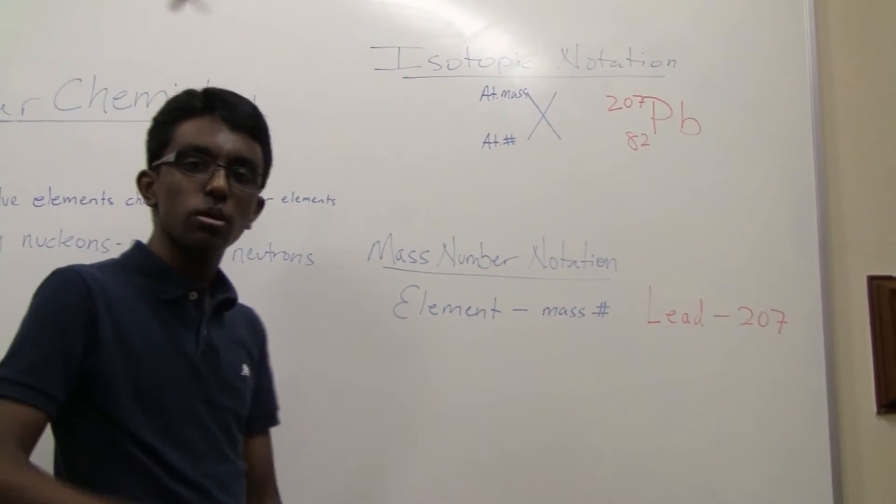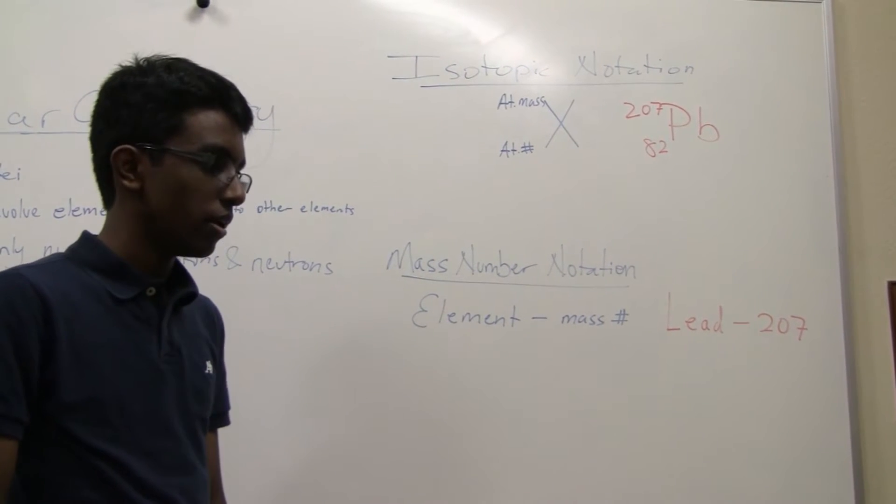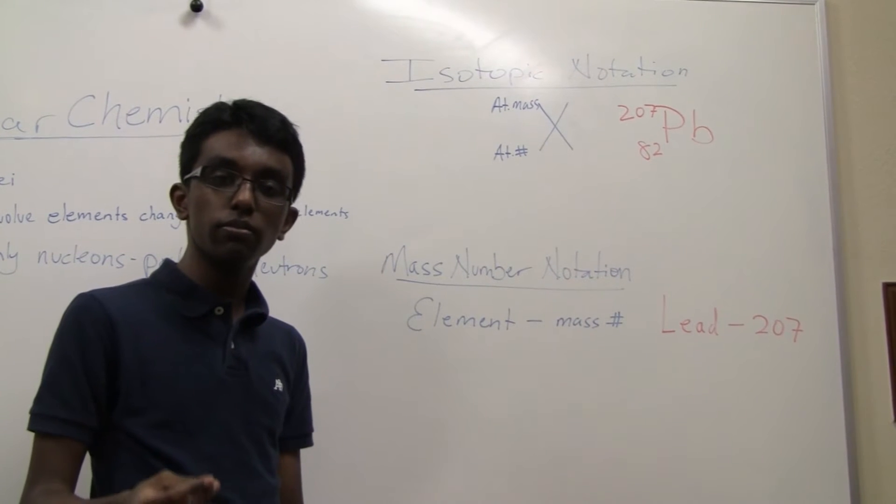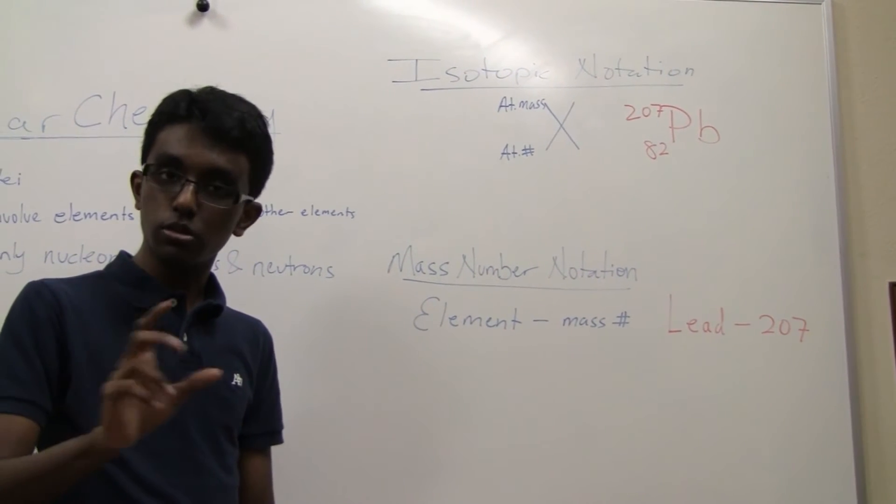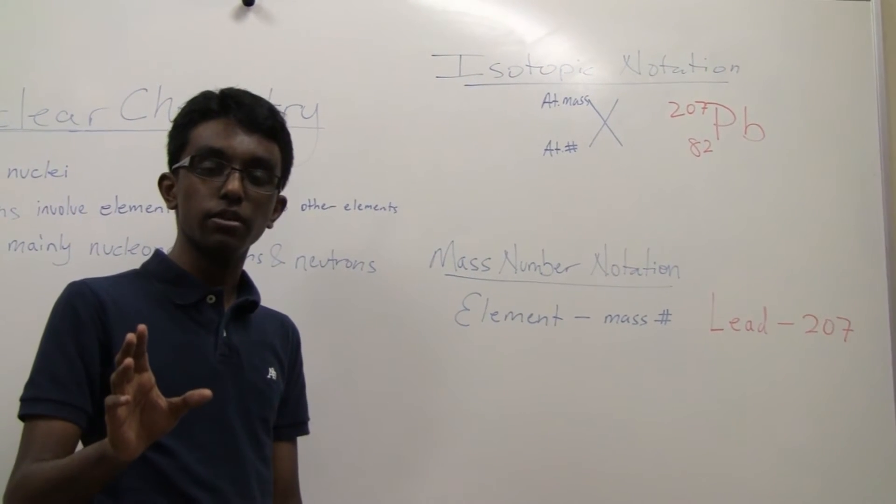Recall that isotopes are elements which have different mass numbers. So for example, carbon-12, carbon-13. Those are both carbon because they have six protons, but they have a different number of neutrons.